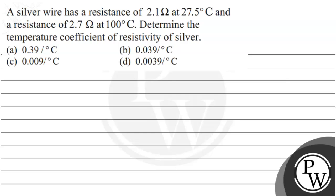Hello Bacho, let's read this question. A silver wire has a resistance of 2.1 ohm at 27.5 degree centigrade and a resistance of 2.7 ohm at 100 degree centigrade.